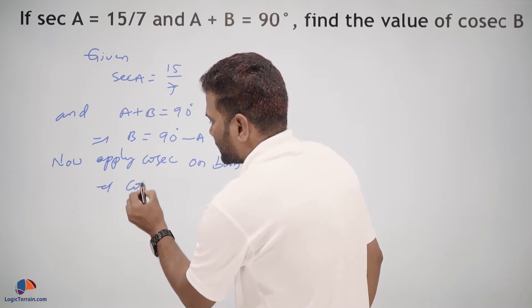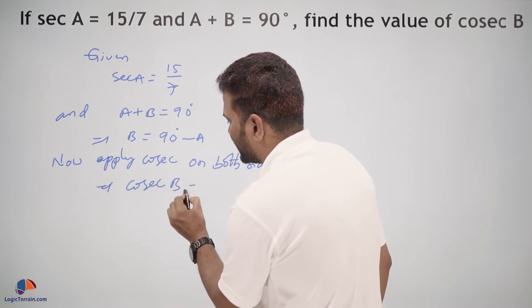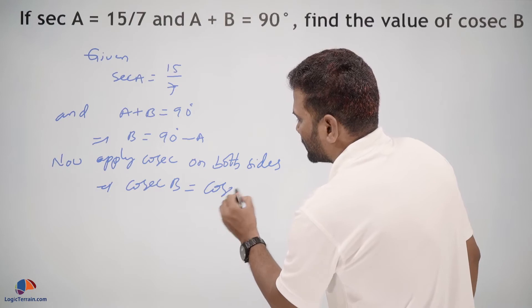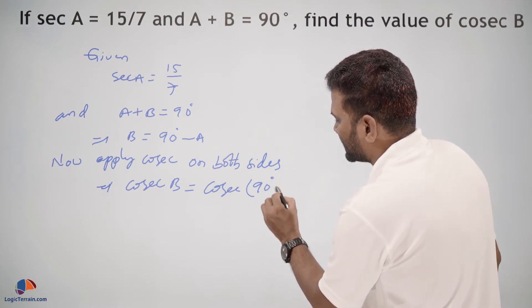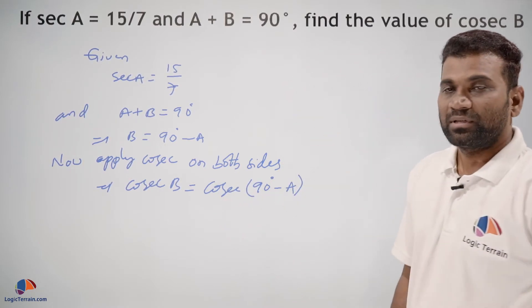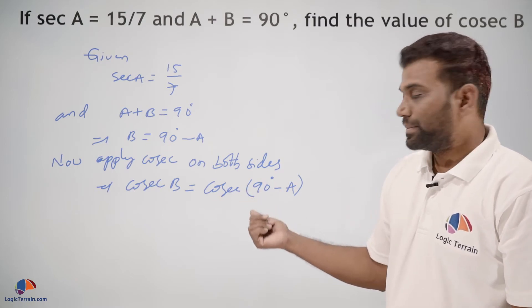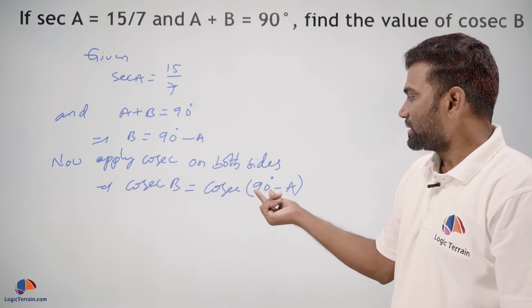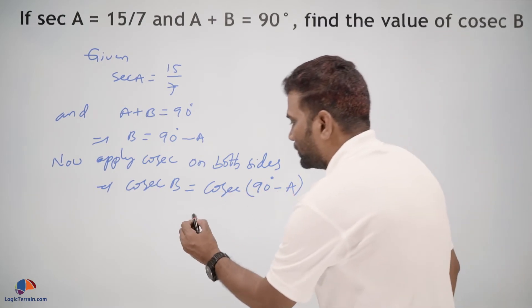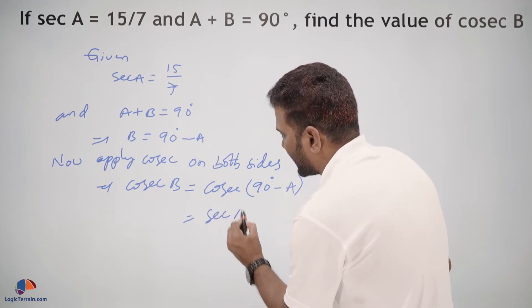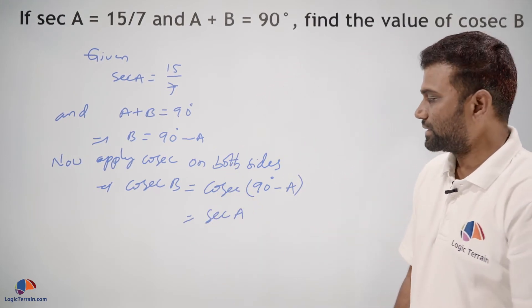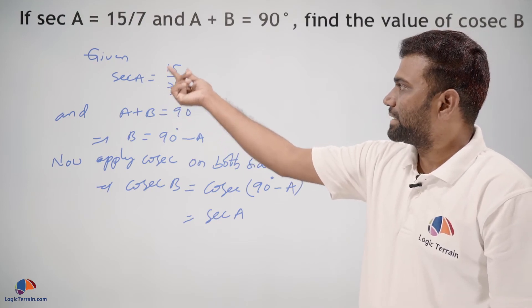Then this becomes cosec B = cosec(90° - A). We know that from complementary angles, cosec(90° - A) = sec A. And we have sec A value, that is 15/7.